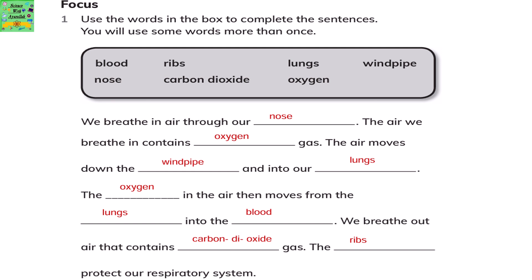The air moves down the windpipe and into our lungs. The oxygen in the air then moves from the lungs into the blood. We breathe out the air that contains carbon dioxide. The ribs protect our respiratory system.